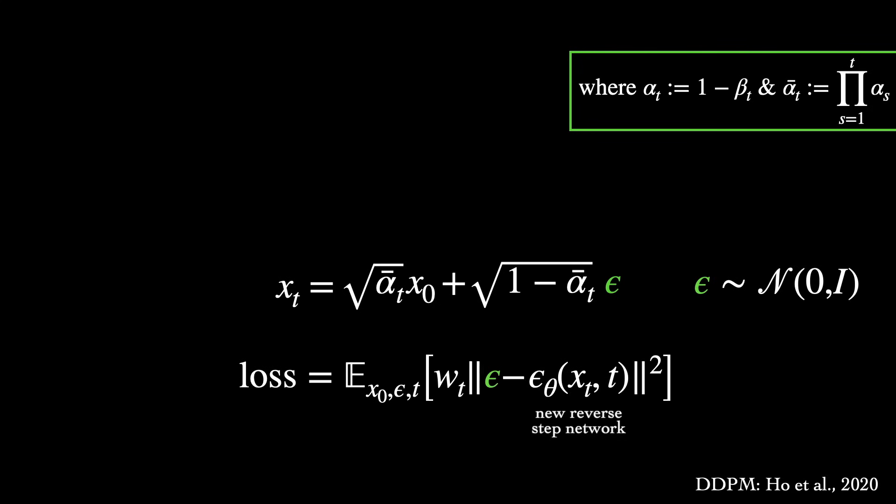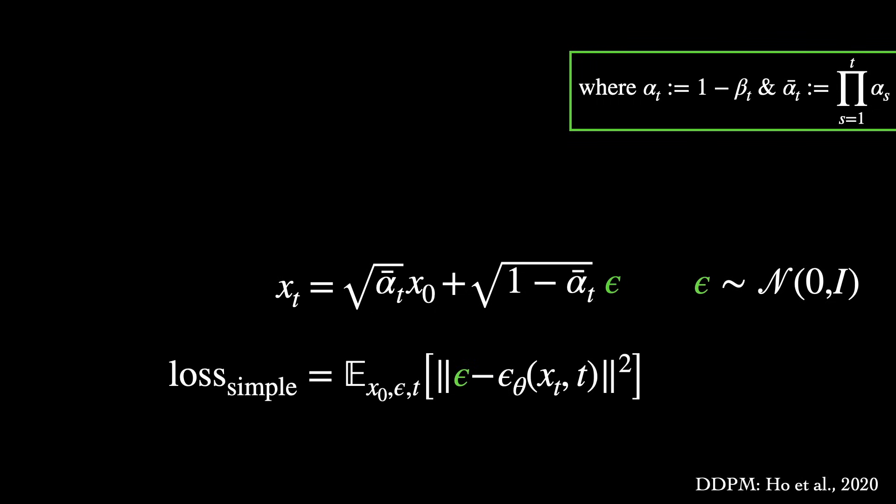The authors also found that a simpler version of the variational bound, that discards the term weights that appear in the original bound, led to better sample quality. So compared to the original variational lower bound, there are objective down-weight steps that have very small noise, at early time steps of the forward process, allowing training to focus on more challenging, greater noise steps.